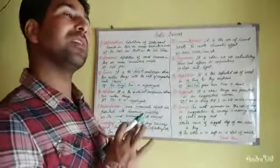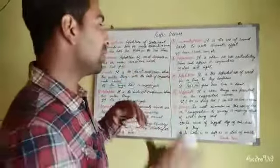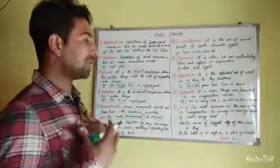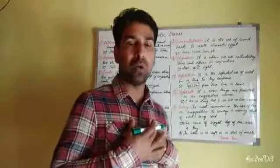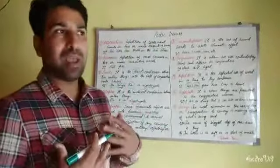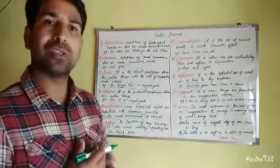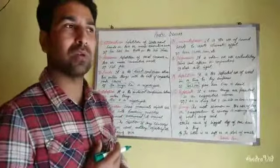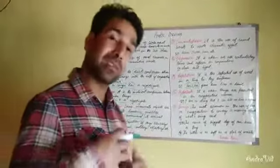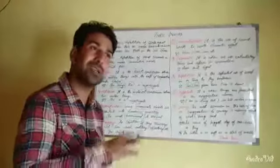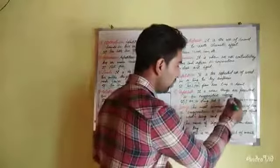Hyperbole means presenting things in an exaggerated manner. For example: 'I'm so strong that I can kill 100 animals in one go in 10 seconds.' Maybe I am strong, but it is impossible to kill even one beast in one go. When we present something — like strength — in an exaggerated form, that is hyperbole.